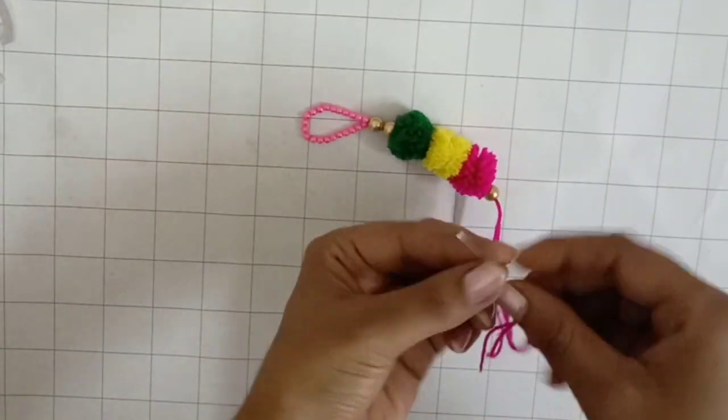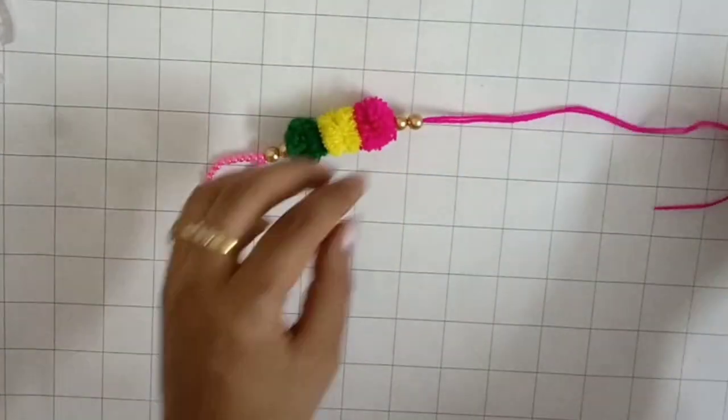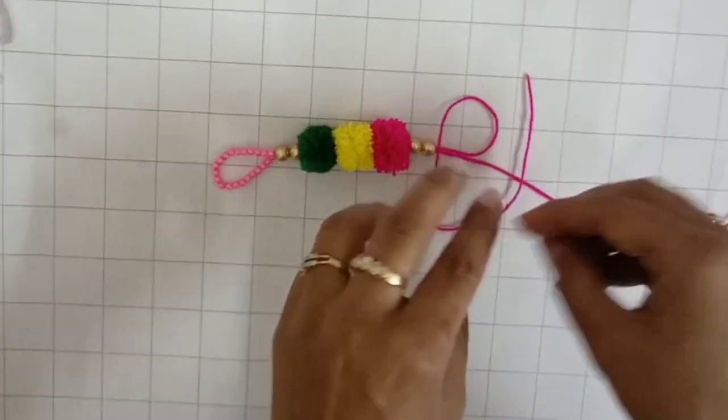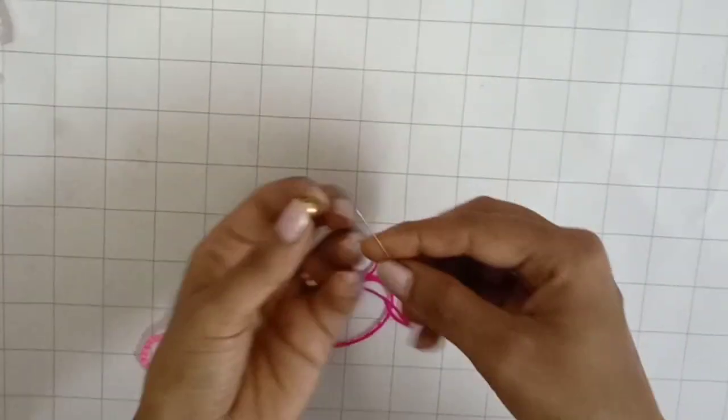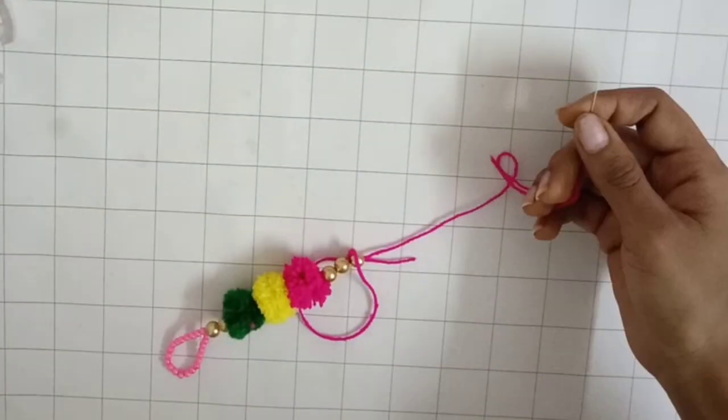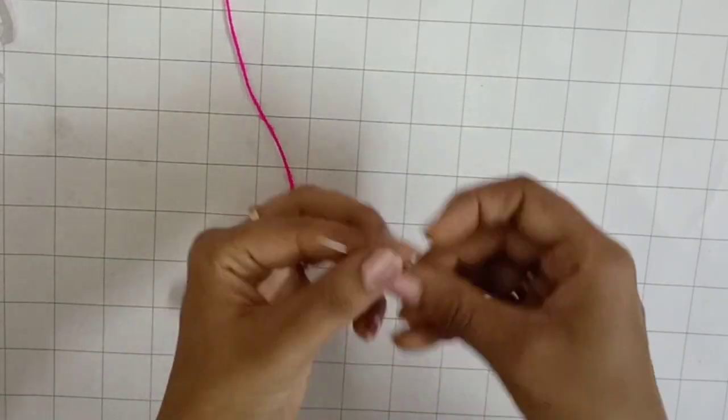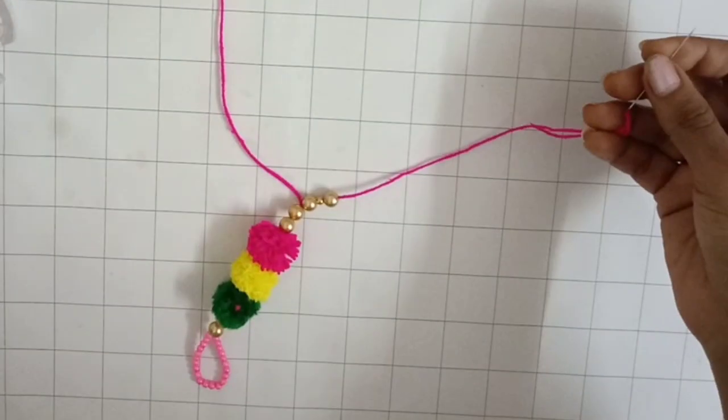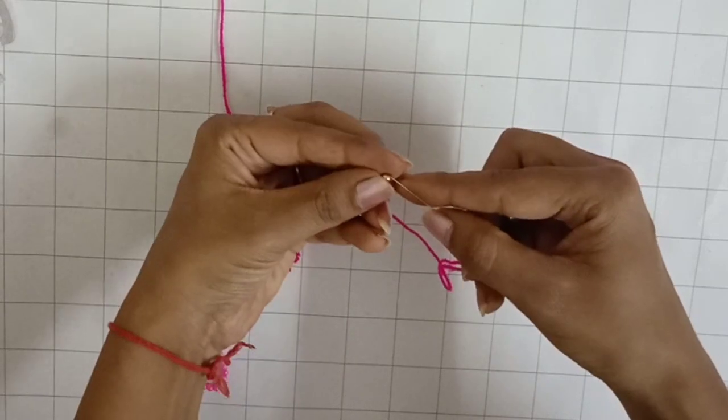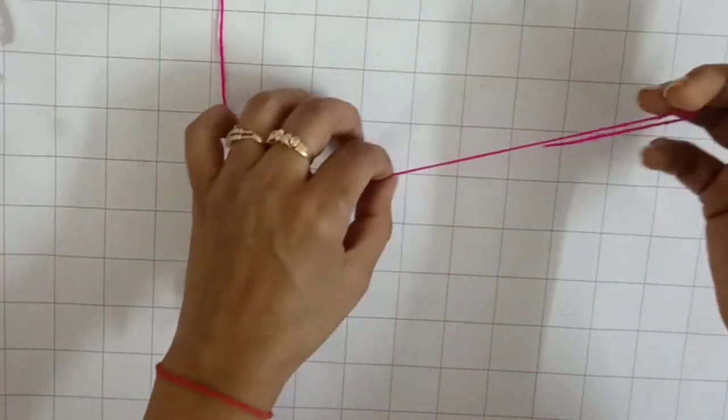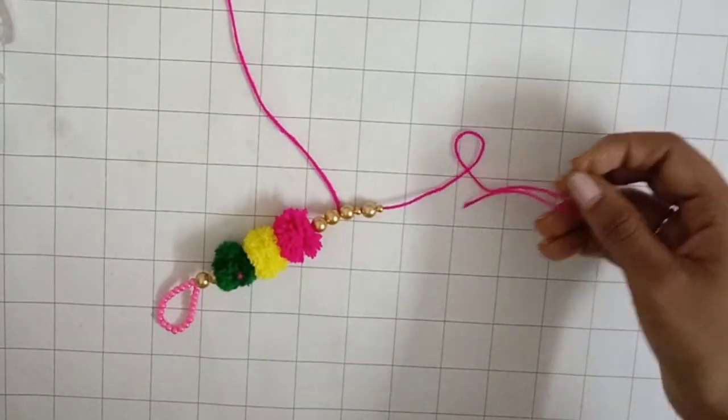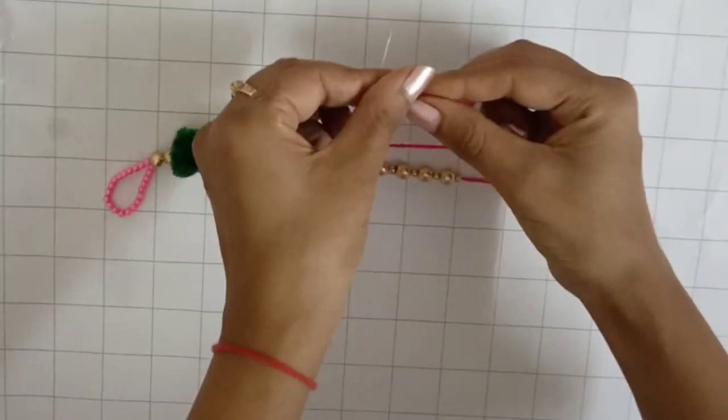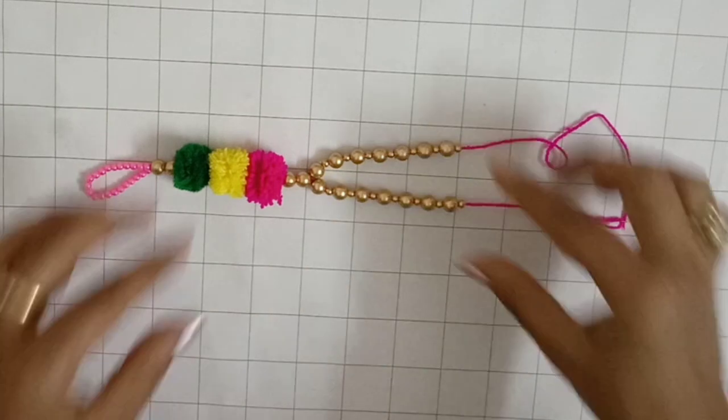And now I have to divide these on two sides. Now I am putting one big and one small golden color bead. So on this one side I have to put around seven big beads and seven small. Again, size you can vary according to your foot size. So on this one I will complete the other side.